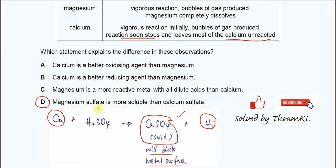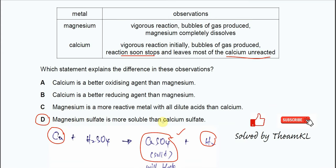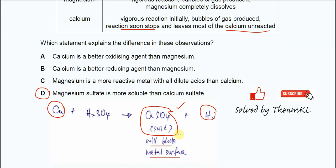Magnesium sulfate is more soluble than calcium sulfate. Magnesium sulfate is soluble and forms an aqueous solution, so it will not block the magnesium metal surface. Because calcium sulfate is a solid and not really that soluble, it blocks the calcium surface and leaves most of the calcium unreacted.